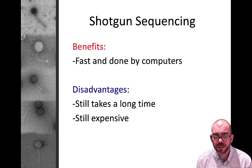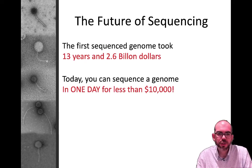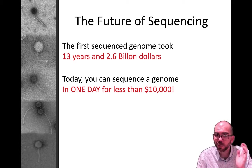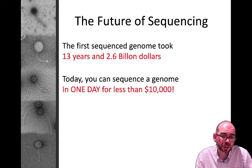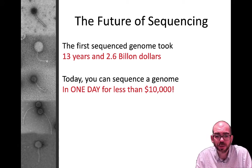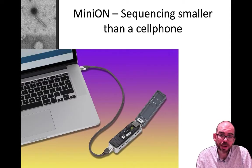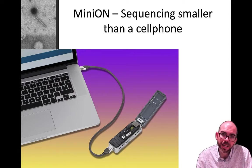Shotgun sequencing is still long and expensive compared to current technological expectations. While the first human genome took 13 years and $2.7 billion to sequence, today we can sequence an entire genome in only one day for less than $10,000. That's why it's likely everyone will eventually be DNA sequenced — the health and ancestry information is too valuable. Today you can buy a device called a MinION, smaller than a cell phone, that reads thousands of bases a second in real time.